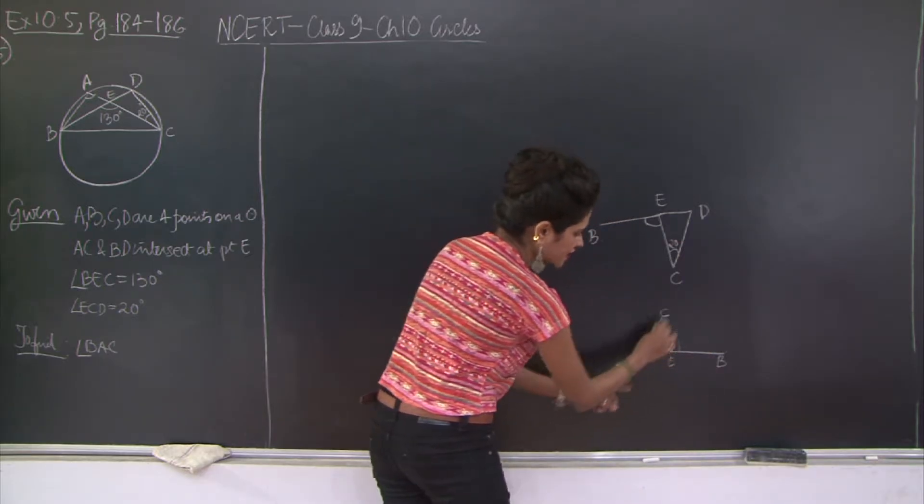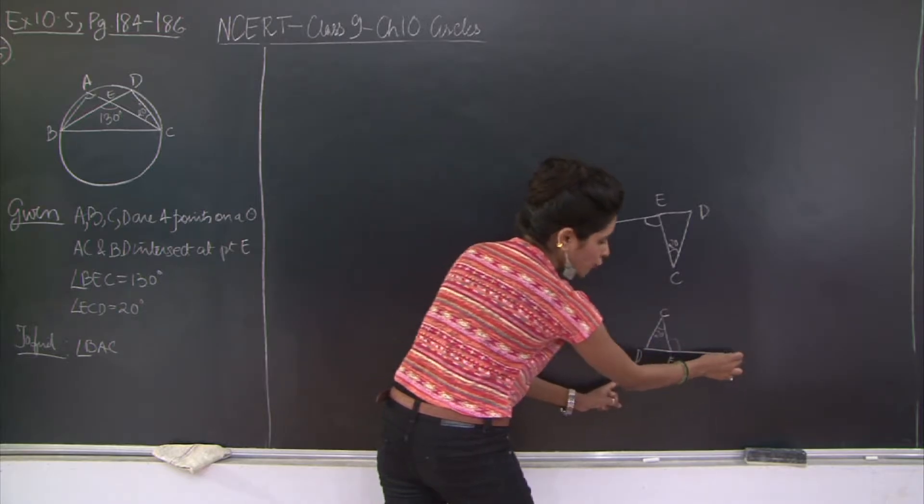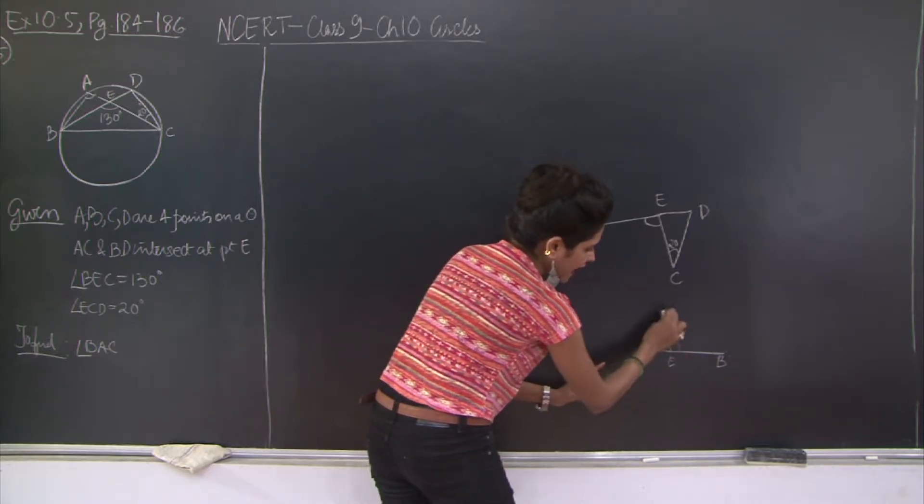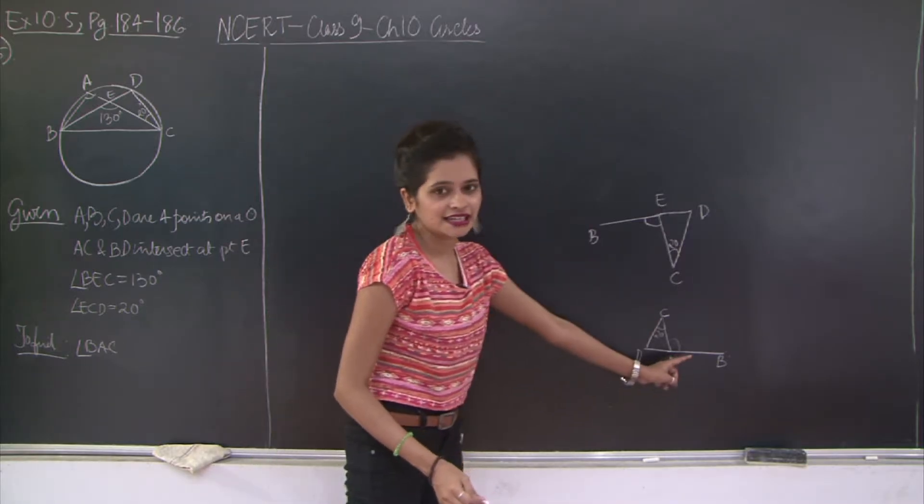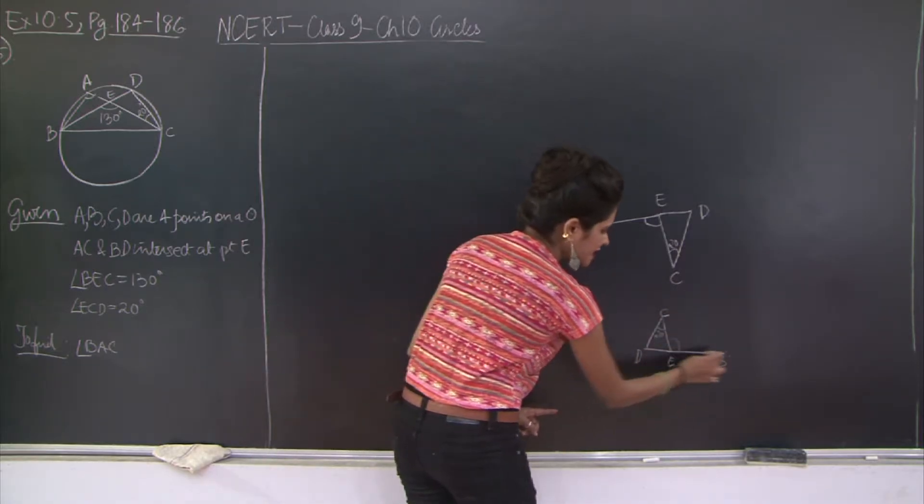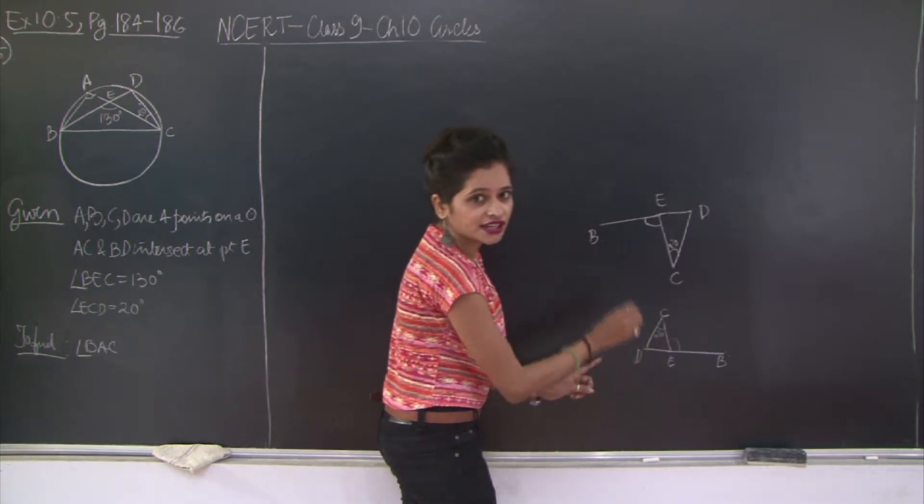This angle is 20 degrees. So obviously this angle is the, now see you have triangle CDE. DE is extended to point B. So angle CEB is the exterior angle for triangle CDE.